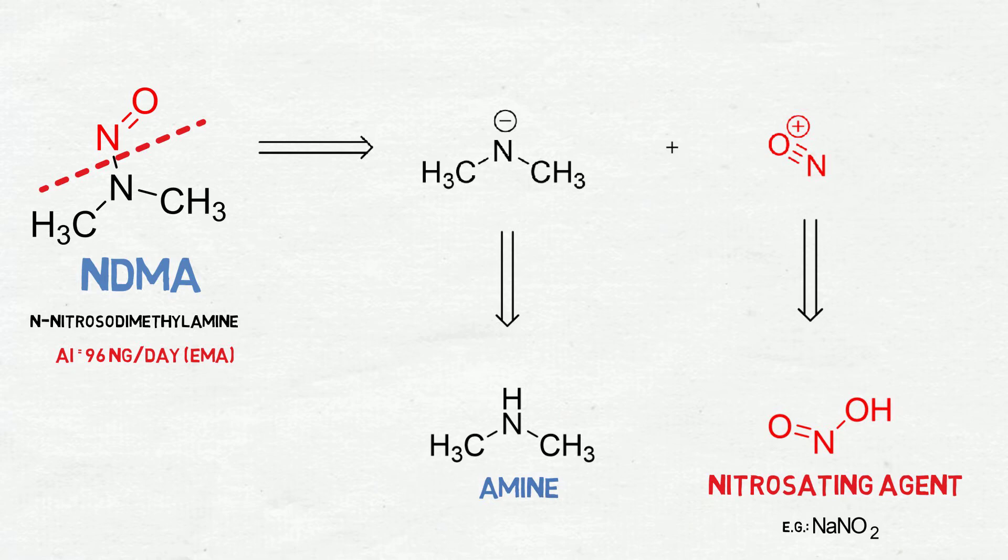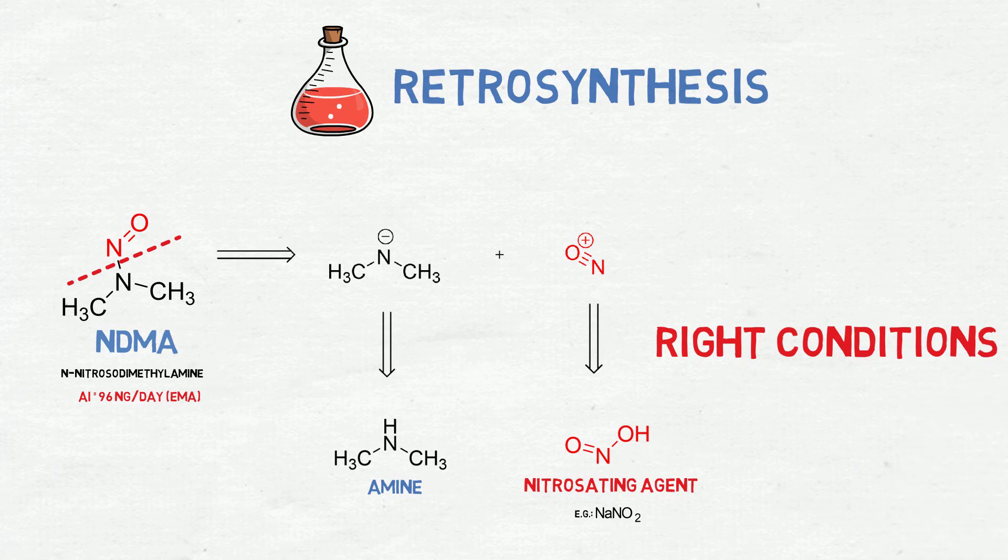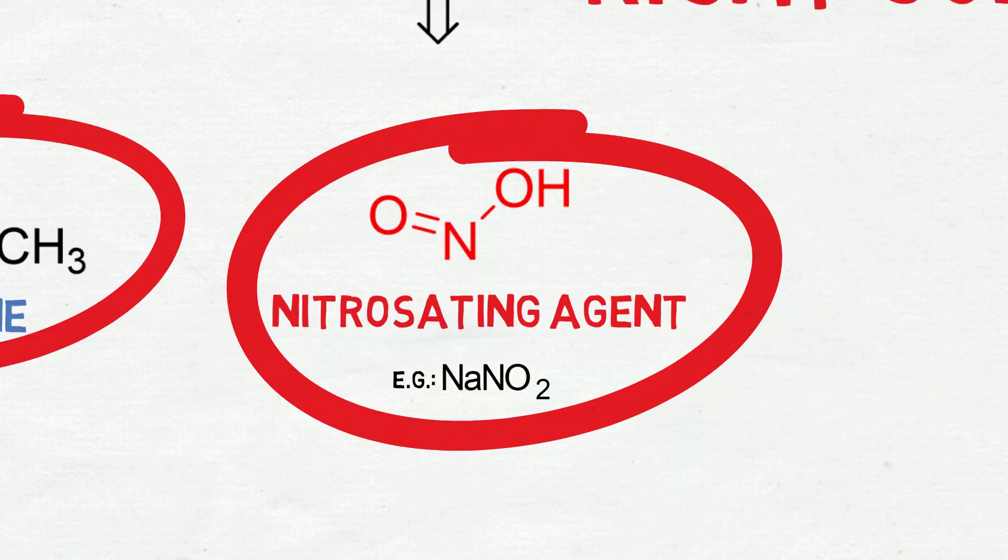Now we can have an idea where NDMA comes from. It came from an amine and a nitrosating agent. But it's not just the combination of these two components. You must ensure that this reaction is happening in the right conditions to favor the formation of NDMA. So basically we need three elements to form a nitrosamine: an amine, a nitrosating agent, and the right condition.